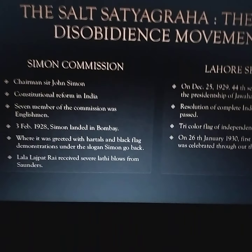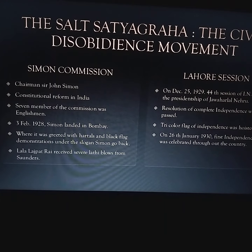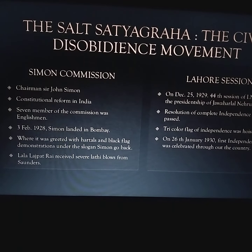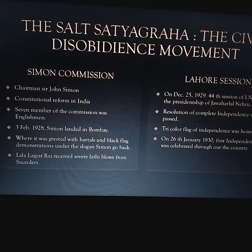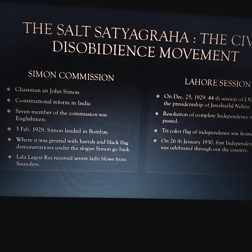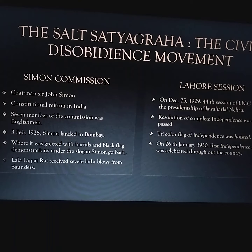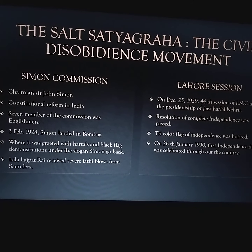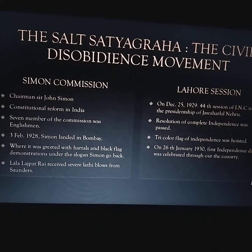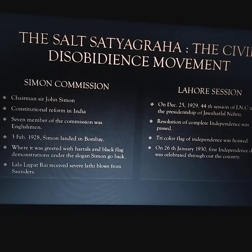In the beginning of 1928, the British government sent a 7-member commission to India, known as the Simon Commission after the name of its chairman, Sir John Simon. The commission was appointed to look into the issue of further constitutional reforms in India. But all 7 members of the commission were Englishmen, and to Indians, it was a violation of the principle of self-determination and an intentional hurting of their self-respect.